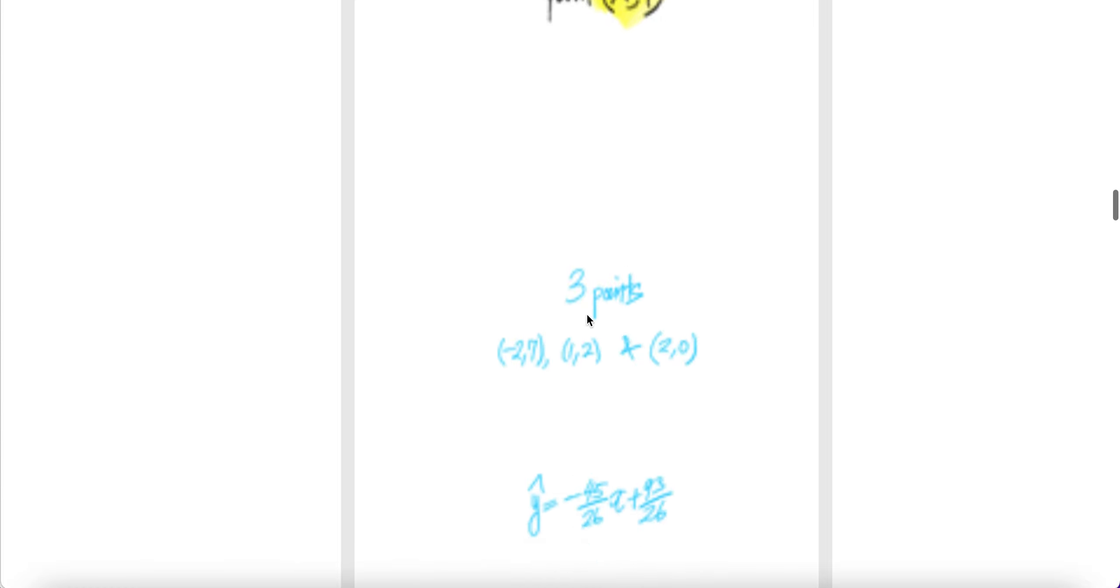Here, we're going to pick three points: minus 2 comma 7, 1 comma 2, and 2 comma 0. When we use these three lines, we can estimate the regression line that tries to go through these three points as much as possible.